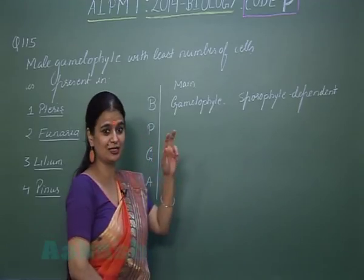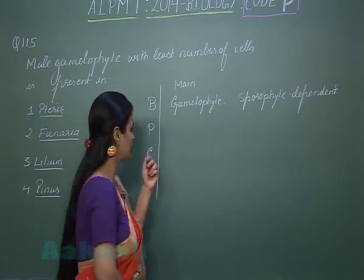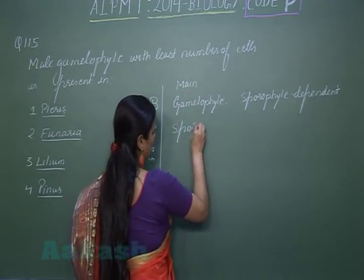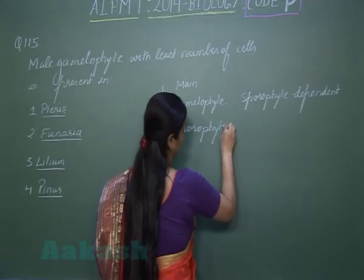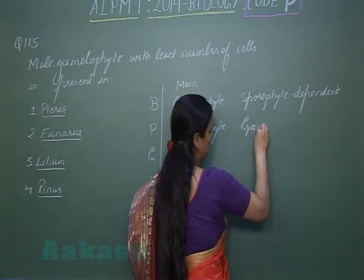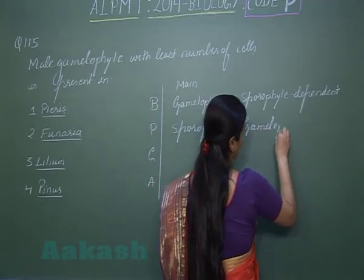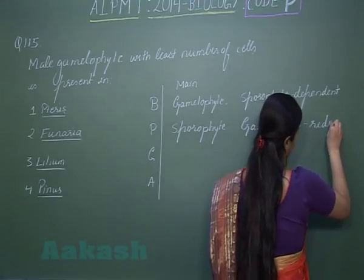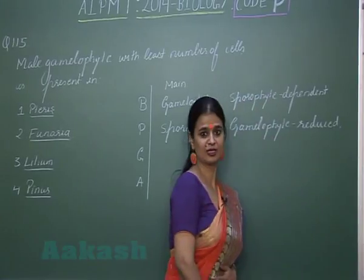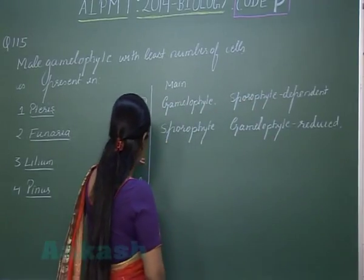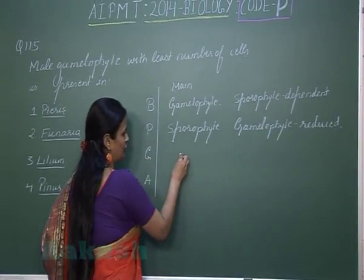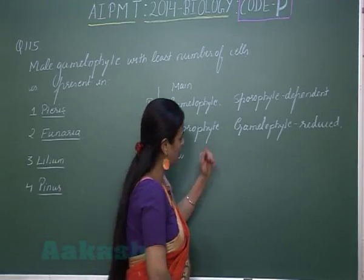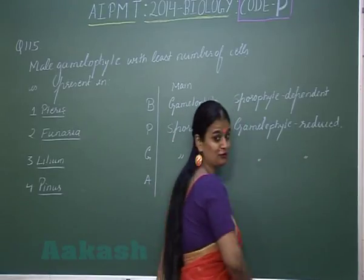Coming to pteridophytes, the condition has changed — here the main plant body is the sporophyte, and the gametophyte is reduced. In gymnosperms also, the main plant body is the sporophyte, and there is more reduction with respect to the gametophyte.